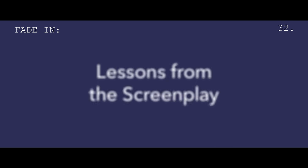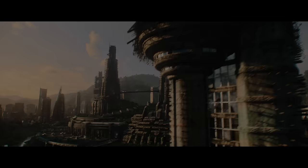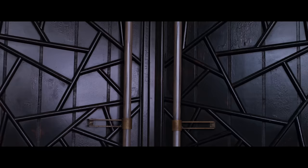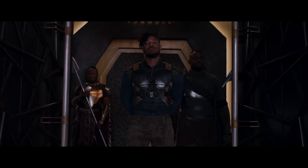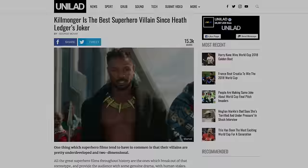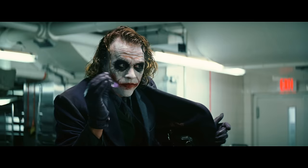Hi, I'm Michael. This is Lessons from the Screenplay. In the weeks following Black Panther's release, I noticed that one character seemed to be receiving a lot of attention: Michael B. Jordan's Eric Killmonger. I kept encountering articles and conversations saying he was the best antagonist since Heath Ledger's Joker in The Dark Knight. When looking at the design of the two characters, it's clear that they have several similarities, but it's their differences that are really interesting.